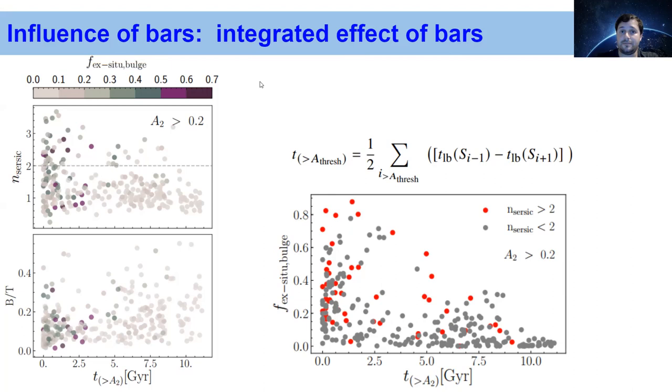So to respond to what all of this tells us about bulge formation and evolution: there is a huge diversity of bulges in Milky Way and M31-like galaxies, and the connection between photometric bulge type and formation pathways is not straightforward. Fitting all of them into only two categories from a theoretical point of view is increasingly difficult. Thanks to the SOC for giving me the opportunity to present this talk.